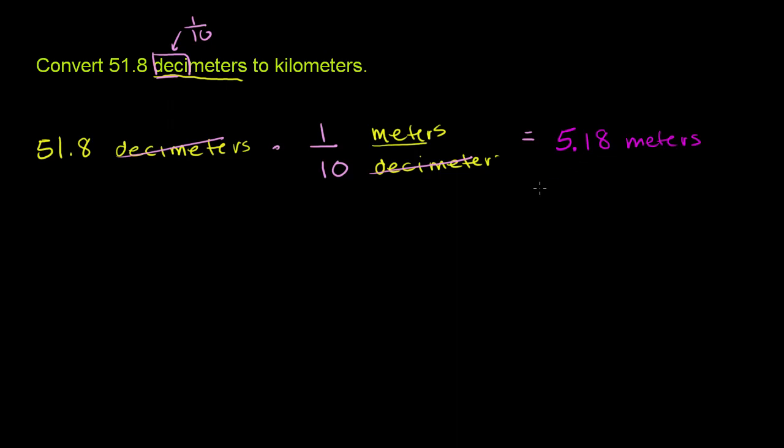And you should always do a reality check. Did it make sense? Does it make sense that 51 decimeters are equal to 5 meters? Well, sure. It should go down. We're going from a smaller unit to a larger unit. So we should have fewer of that larger unit to make the same distance in this case. Meter is a unit of length.